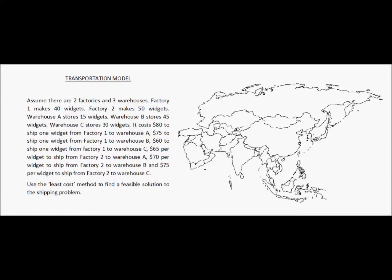Assume there are two factories and three warehouses. Factory one makes 40 widgets and factory two makes 50 widgets. Warehouse A stores 15 widgets, warehouse B stores 45 widgets, and warehouse C stores 30 widgets.